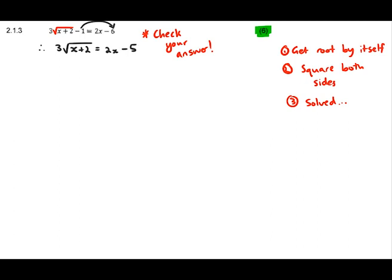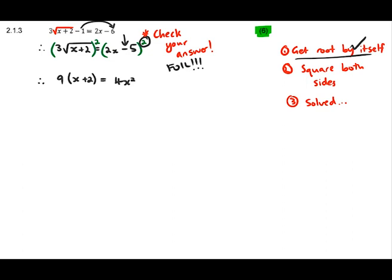Step one is done. Step two is to square both sides — put a squared bracket on both sides. There's a minus inside the right-hand bracket so it needs to be foiled. On the left-hand side I get 9(x + 2) because 3 squared is 9. Foiling the right-hand side gives 4x squared minus 20x plus 25.